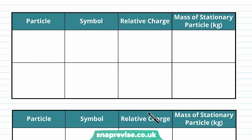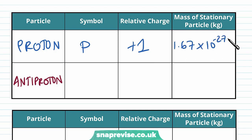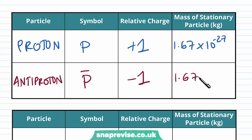Another particle-antiparticle pair is the proton and the antiproton. A proton has symbol p, relative charge +1, and mass 1.67 × 10⁻²⁷ kg. We can deduce the properties of an antiproton: its symbol is p̄; its relative charge is −1 (same magnitude as the proton but opposite sign); and its mass is 1.67 × 10⁻²⁷ kg, the same as the proton.